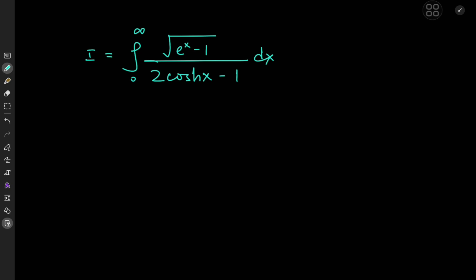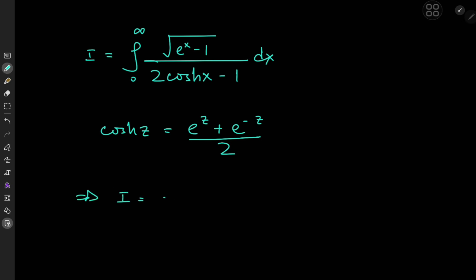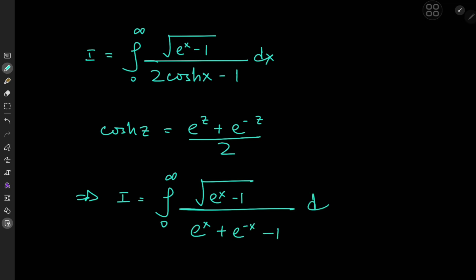So how exactly do we approach this integral? Well, it would be nice if we can expand the hyperbolic cosine function in terms of exponential functions. We know that cosh z equals e to the z plus e to the negative z divided by 2. So 2 cosh z is just the sum of exponential functions, which means the integral I is the integral from 0 to infinity of root e to the x minus 1 divided by e to the x plus e to the negative x minus 1 dx.